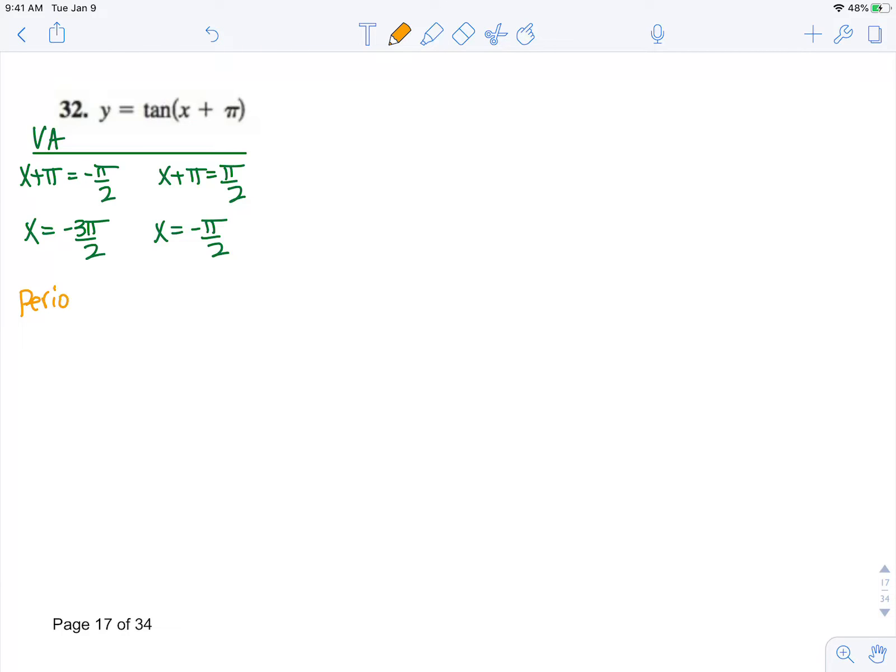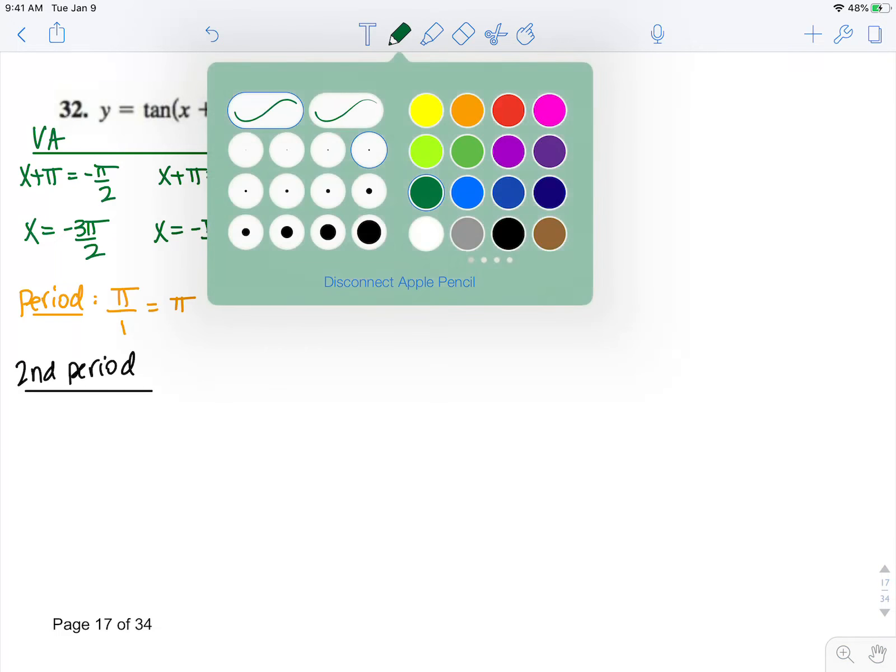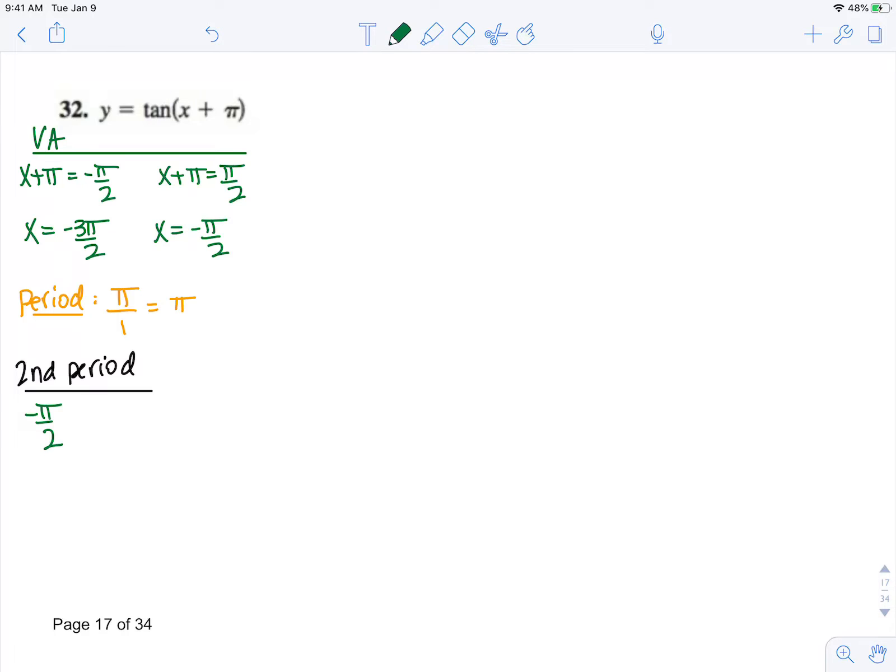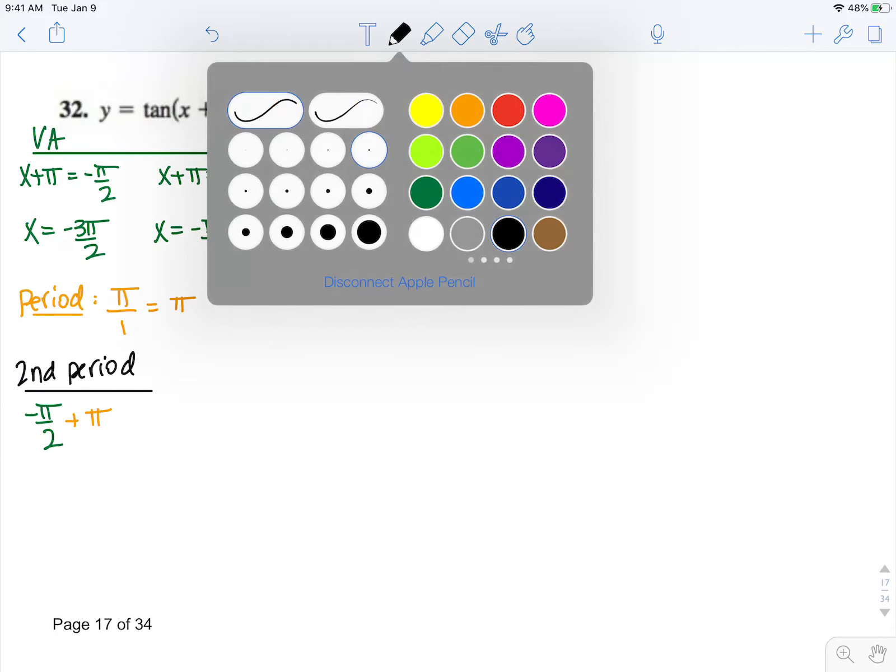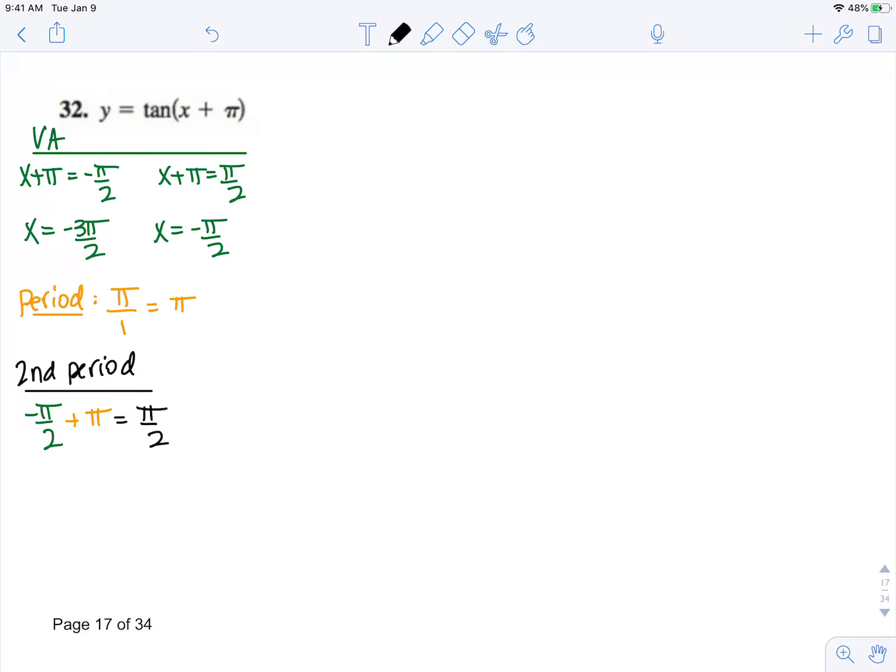For my period, that's going to be π over 1, which is π. So for my second period, I know it's going to start at negative π/2, and it's going to end π away from that, which is positive π/2.